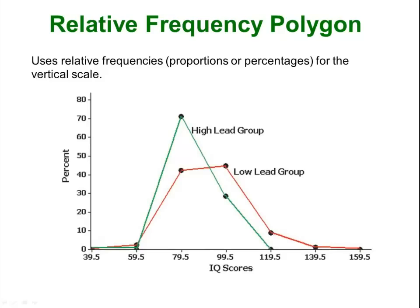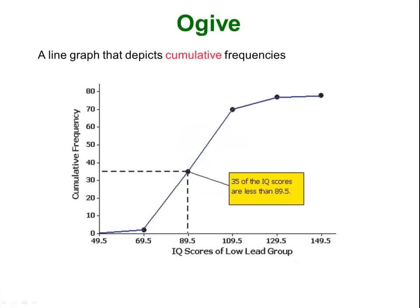A relative frequency polygon is the same thing but for relative frequencies. An ogive — most people pronounce it ogive — is your frequency polygon but listing cumulative frequencies. When we did our cumulative frequency table the numbers just went up because you were adding each new class to the previous class total. These things always end up going all the way up to whatever the maximum was — in this case it looks like there were about 80 people in the study.